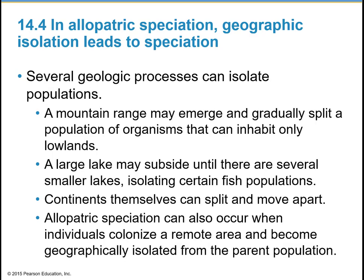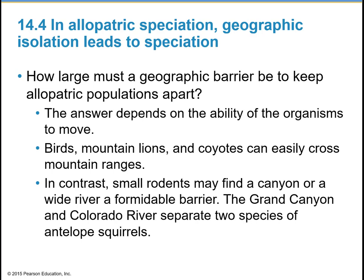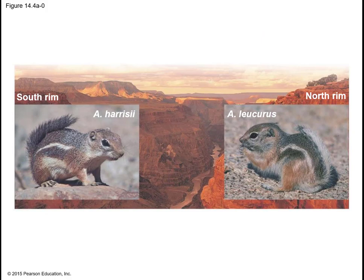Processes that can isolate populations include: a mountain range emerging and splitting a population, a large lake subsiding into several smaller lakes isolating fish populations, and continents splitting and moving apart. Allopatric speciation can also occur when individuals colonize a remote area and become geographically isolated from the parent population. The size of a geographic barrier depends on the organisms' ability to move — birds and mountain lions can cross mountain ranges, but small rodents may find a canyon or wide river a formidable barrier. The Grand Canyon and Colorado River separates two species of antelope squirrels.